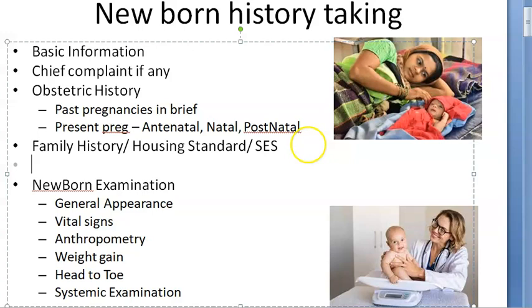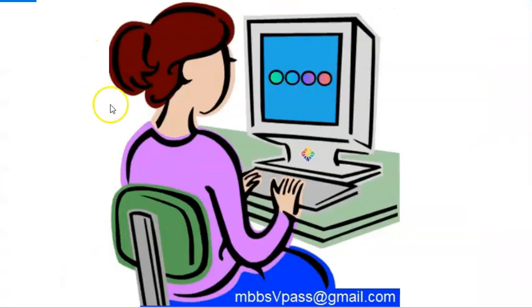Then after this comes to history taking over, now we will come to newborn examination. In newborn examination, we look at general appearance, vital signs, anthropometry, weight, head to toe examination, systemic examination. This is what we have to look at. So basically, shall we get started people?